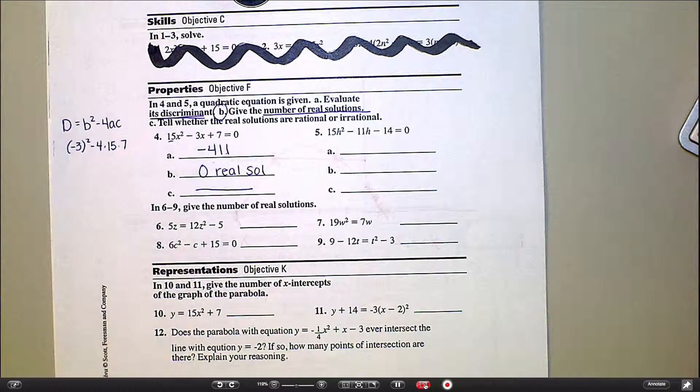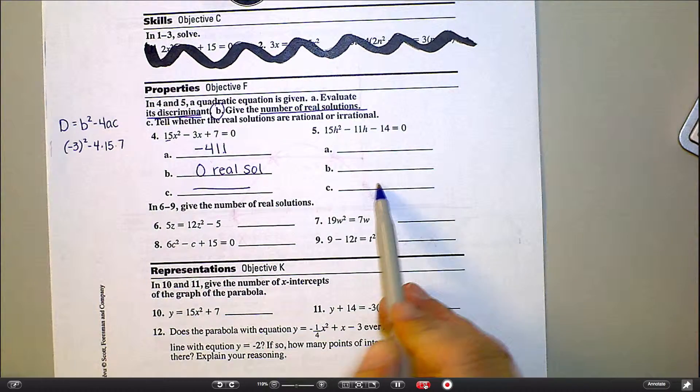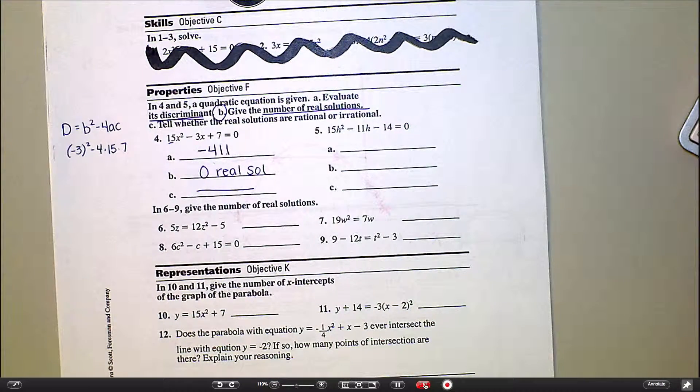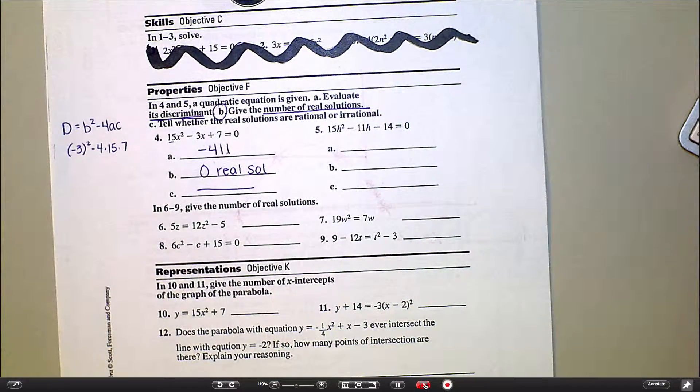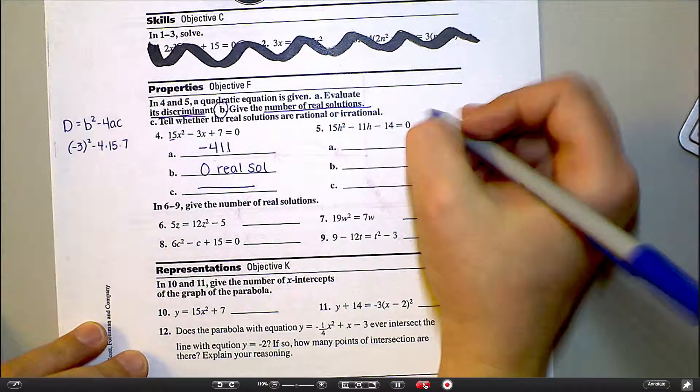And if you have no real solutions, you can't tell whether they're rational or irrational. So actually, I guess that means I'm going to do number 5 also because I want to do one where we talk about part c. And I'm guessing number 5 will have an answer for part c. So let's do part a, discriminant again.